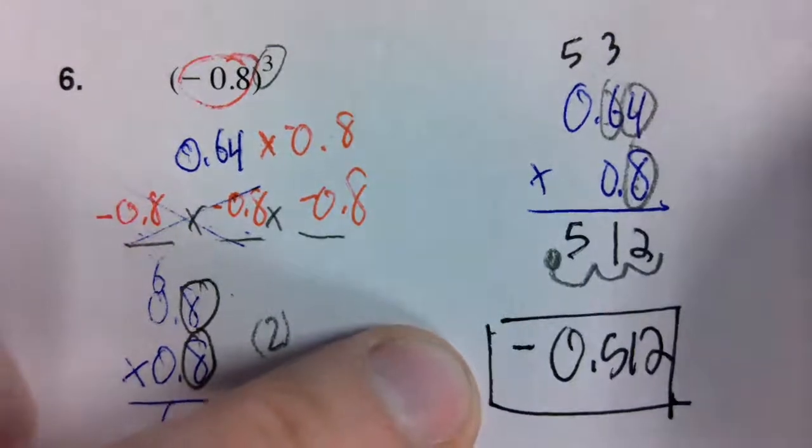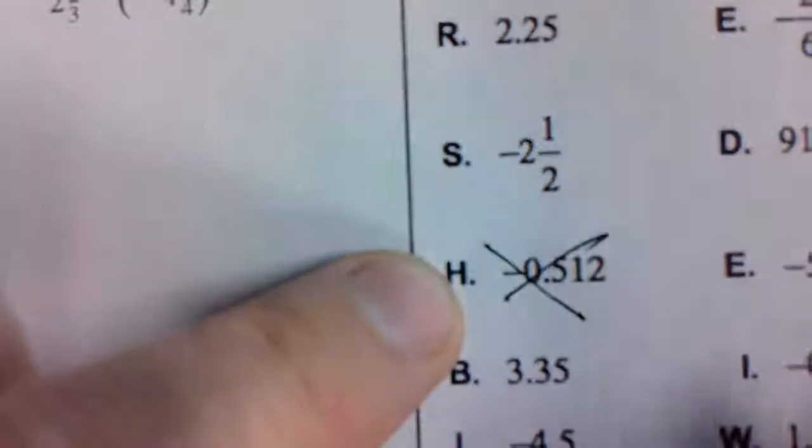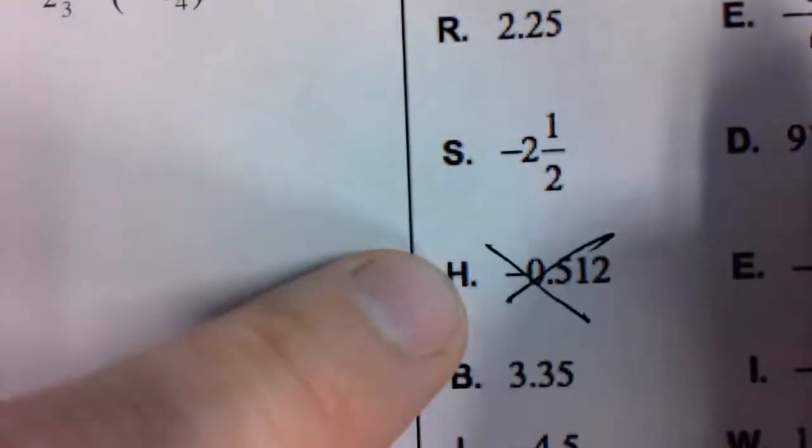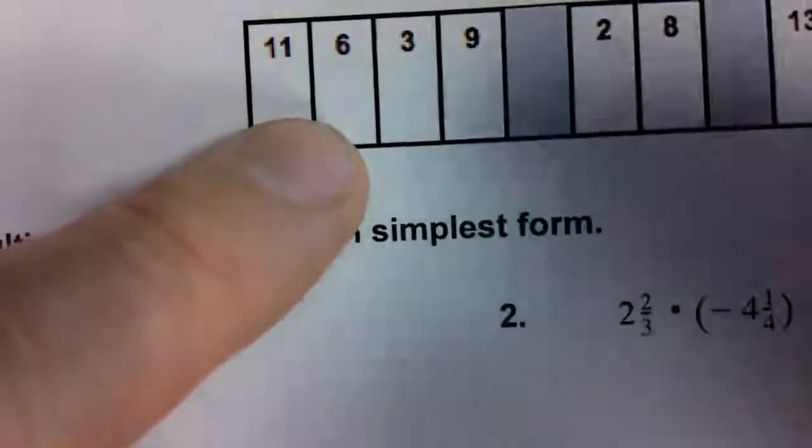That gives us -0.512, negative five hundred twelve thousandths. Cross that off - you're only going to use that answer once. At number six, put the letter H there.